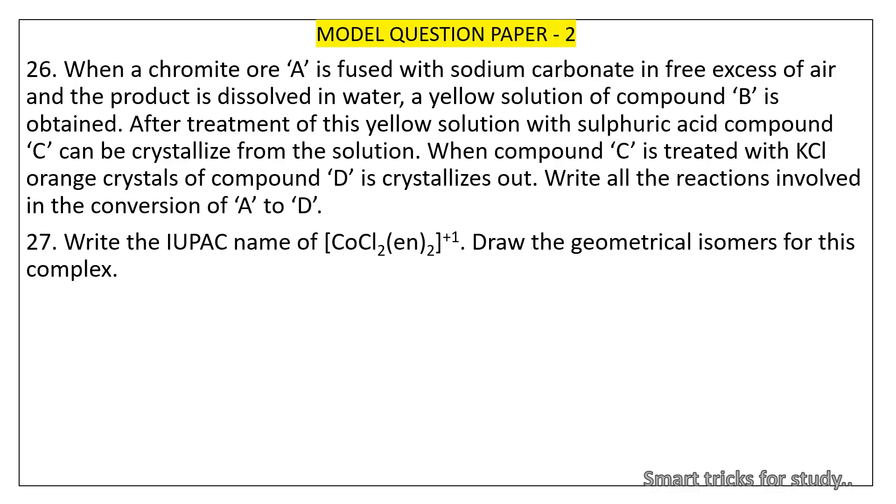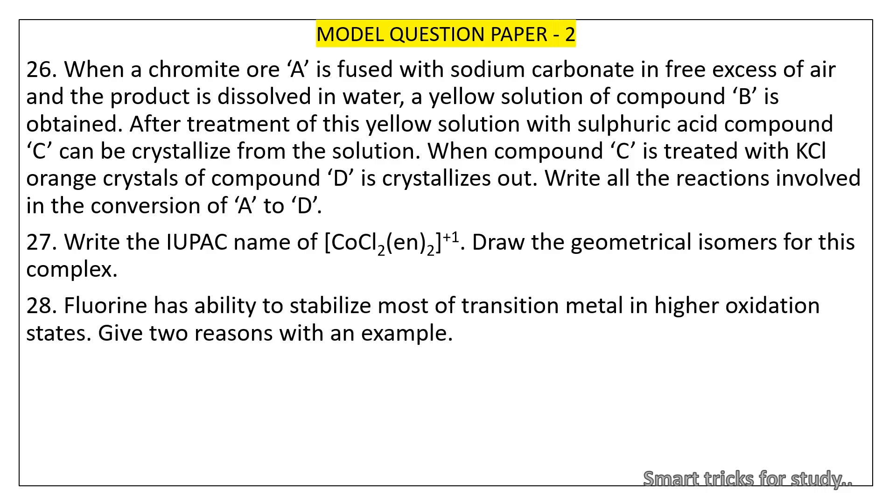27. Write the IUPAC name of [CoCl2(En)2]+1. Draw the geometrical isomers for this complex.